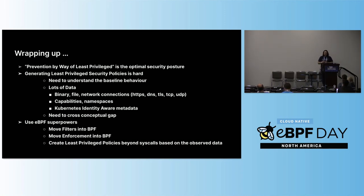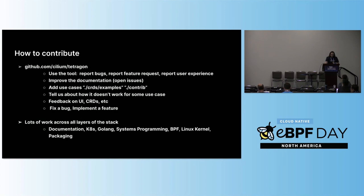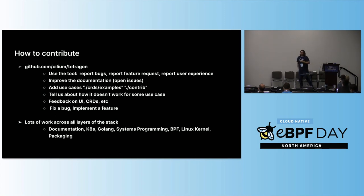By using BPF, we can add all these filters and actions in the kernel to get this least privilege thing that we want. And you saw that when I tried to log into that shell, I can't even execute things that are no longer available to me. I'd like to end with this: if you want to help, I would love it — always looking for people. There's the GitHub page: Cilium/Tetragon. You don't even have to be a coder — you can just use the tool, file bugs, tell us where our documentation isn't great, or file a feature request.